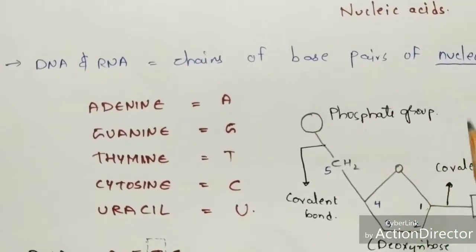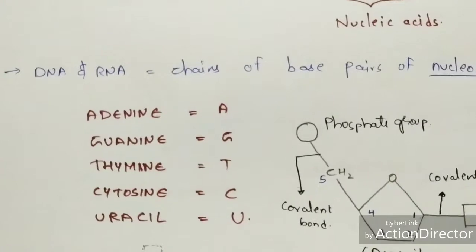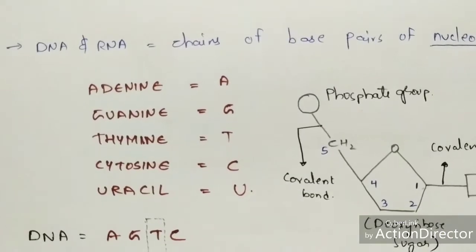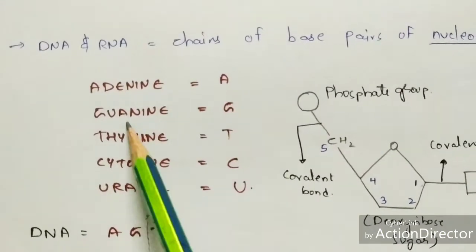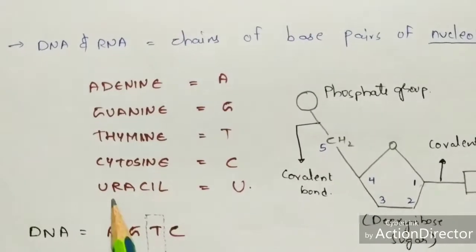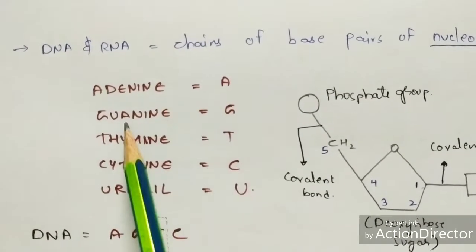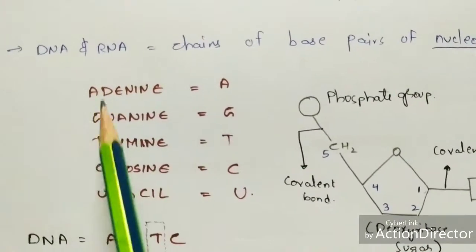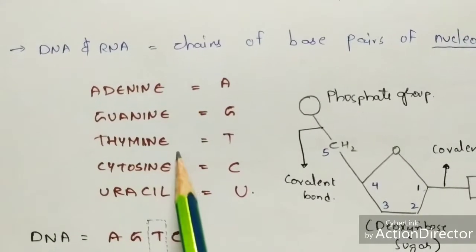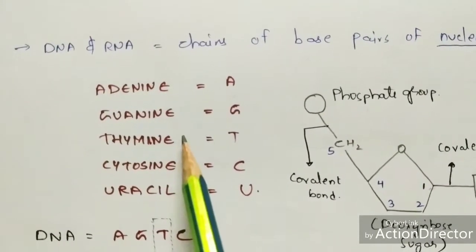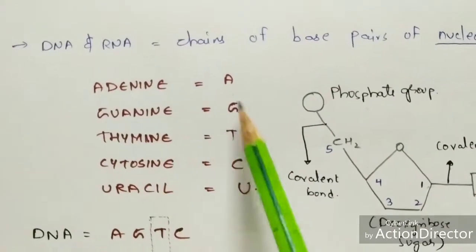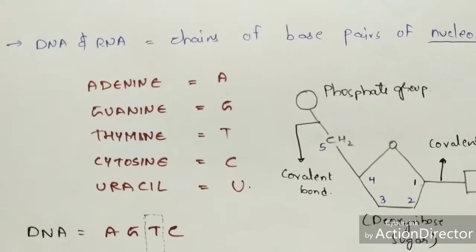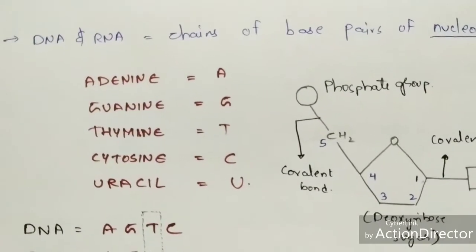There are five nitrogenous bases: adenine (A), guanine (G), thymine (T), cytosine (C), and uracil (U). The structures of all these nitrogenous bases have been given in my previous video — the link will be in the description box if you are interested.